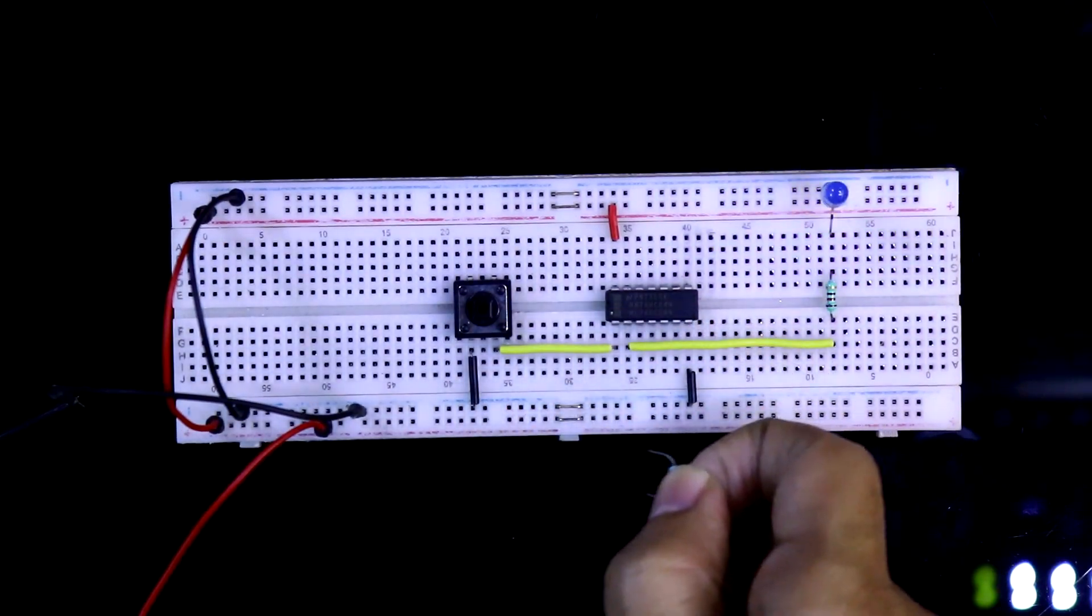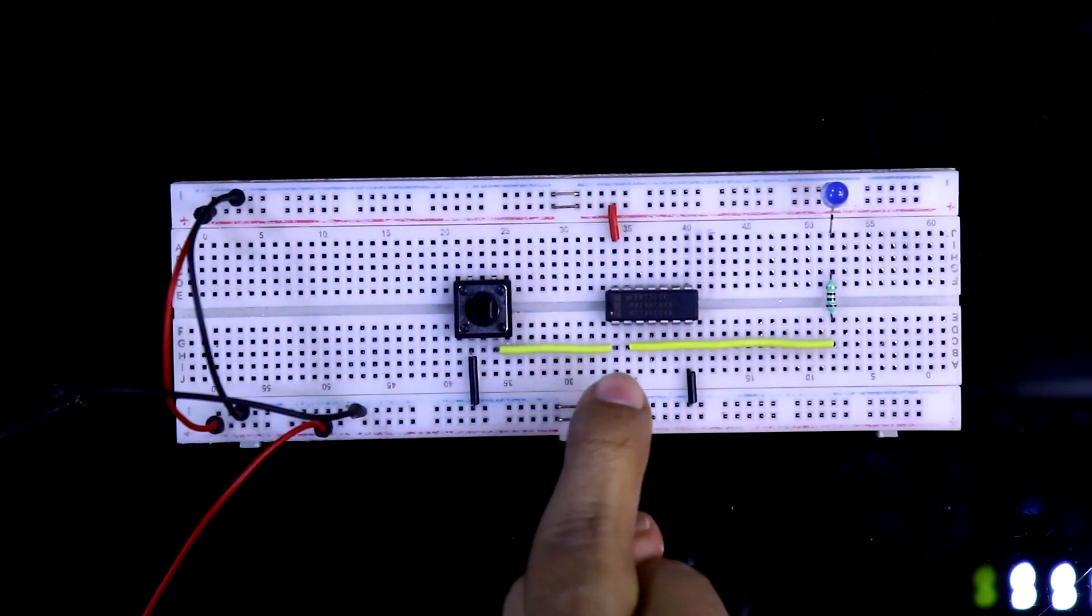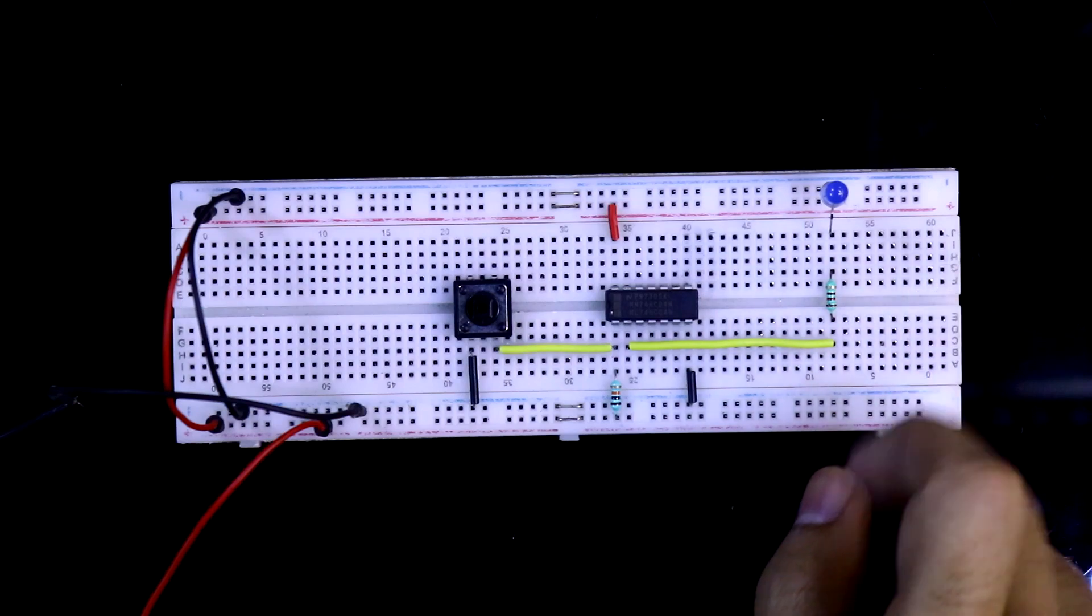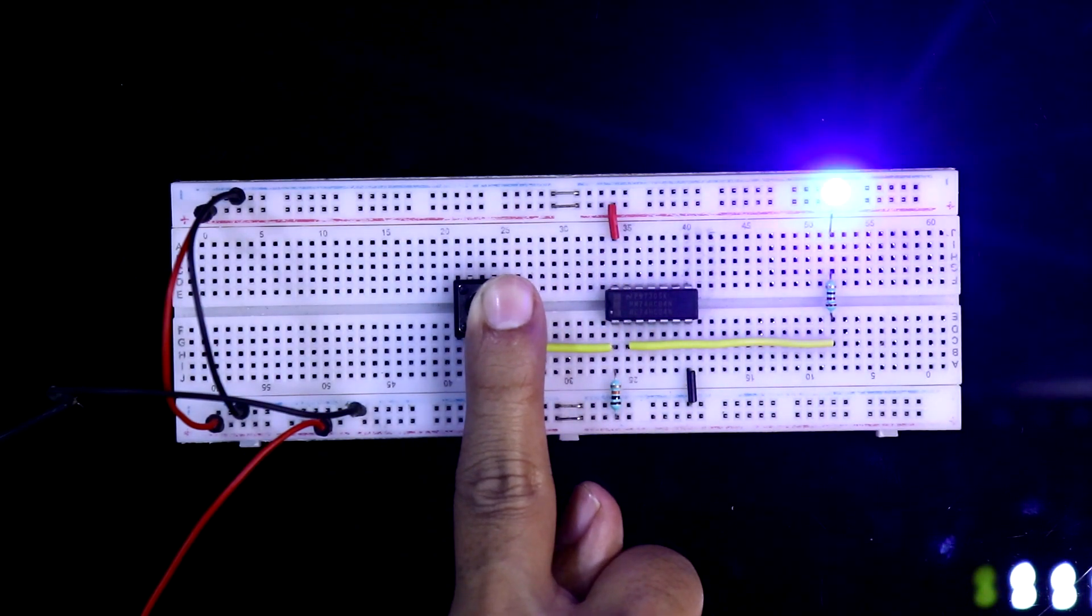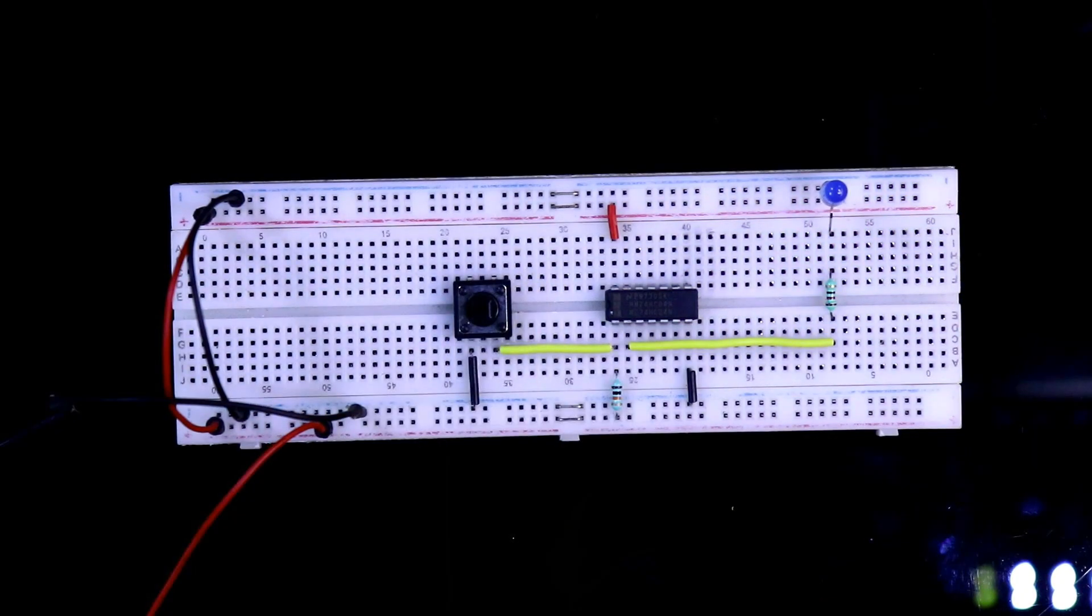Now this resistor should be connected to the plus 5 volt. Now in the default state, it is zero. And whenever the switch is pressed, we are getting the output. So according to your requirements, you have to use pull-up or pull-down resistor.